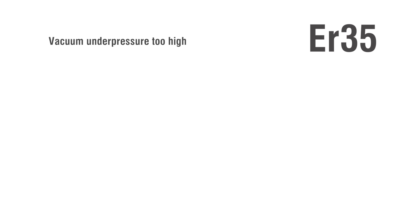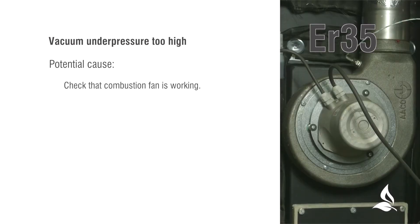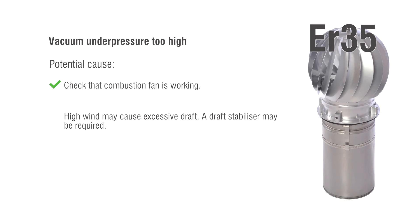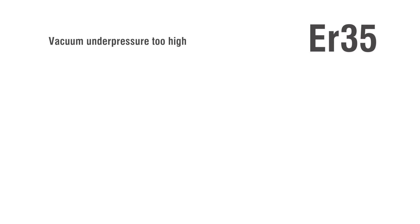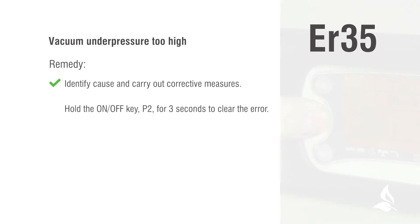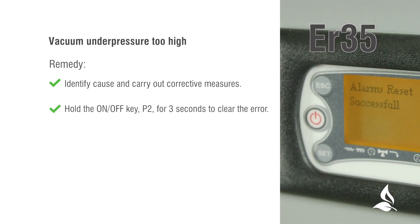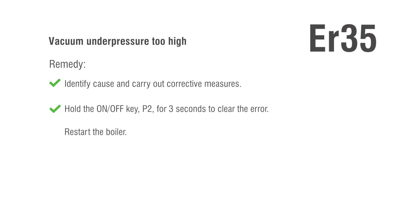ER35: Vacuum under pressure too high. Potential causes: check that the combustion fan is working; a high wind may cause excessive draft — a draft stabiliser may be required. Remedy: identify the cause and carry out corrective measures. Hold the on-off key for 3 seconds to clear the error, then restart the boiler.